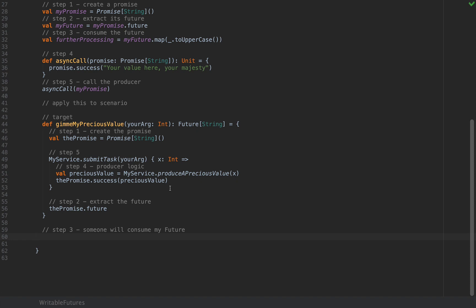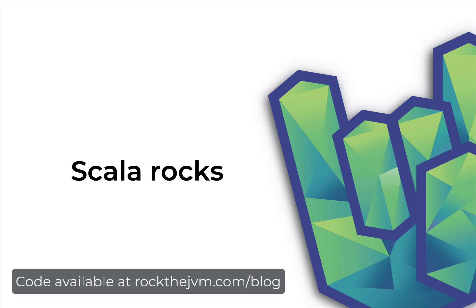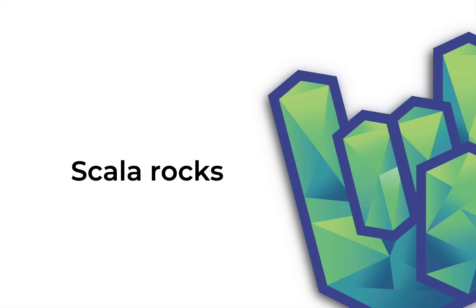The Promise class also has other methods such as 'failure', 'trySuccess', 'tryFailure', and more — you can check out the Promise API. I hope this was useful. I'm Daniel, and you can find this article at rockthejvm.com/blog in written form. You can follow me on Twitter and LinkedIn with the links in the description. Please leave your feedback in the comments, and if you like this video, go ahead and subscribe because more videos like this will be coming soon. Until next time, thank you for watching.